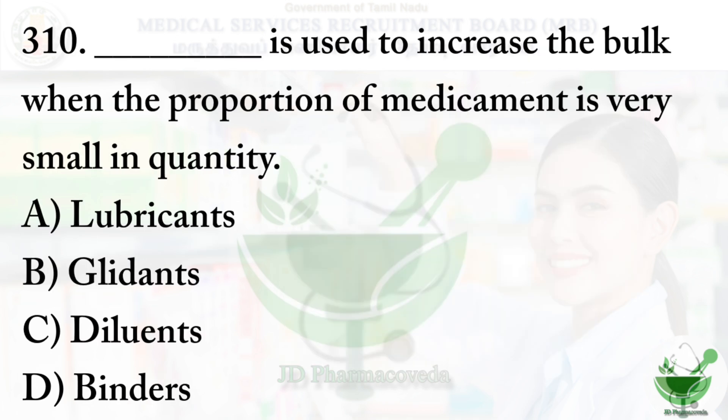Question number 310: What is used to increase the bulk when the proportion of medicament is very small in quantity? Option A: lubricants, Option B: glidants, Option C: diluents, Option D: binders. The correct answer is Option C, diluents.